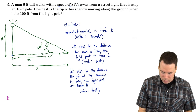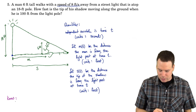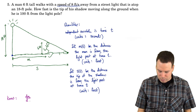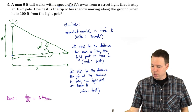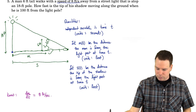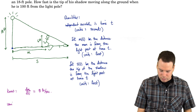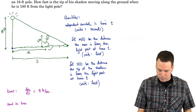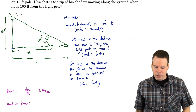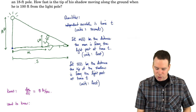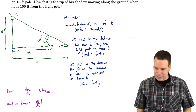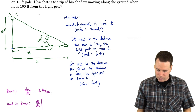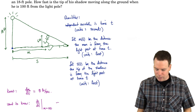What do we know? The man walks at 8 feet per second, so dm/dt = 8 feet per second. What do we want to know? We want to find how fast the tip of the shadow is moving along the ground when the man is 100 feet from the light post — that is, we want ds/dt when m = 100.